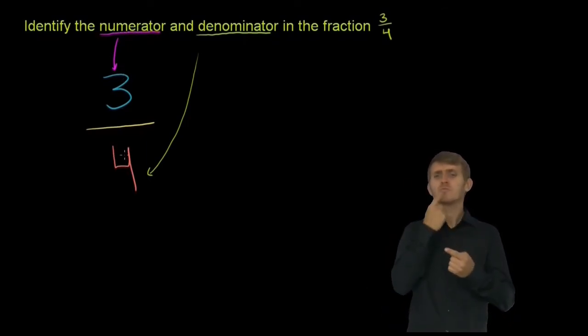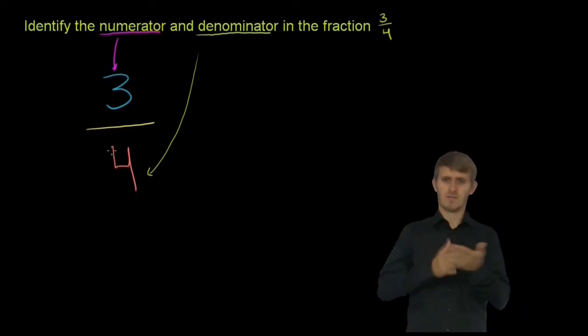Now, to think about what this represents, what this fraction represents, you can think of it as 3 out of 4 pieces of a pie. That's how I think about it. So you can imagine, the denominator tells us, what are we taking a fraction out of? Or how many pieces are there?